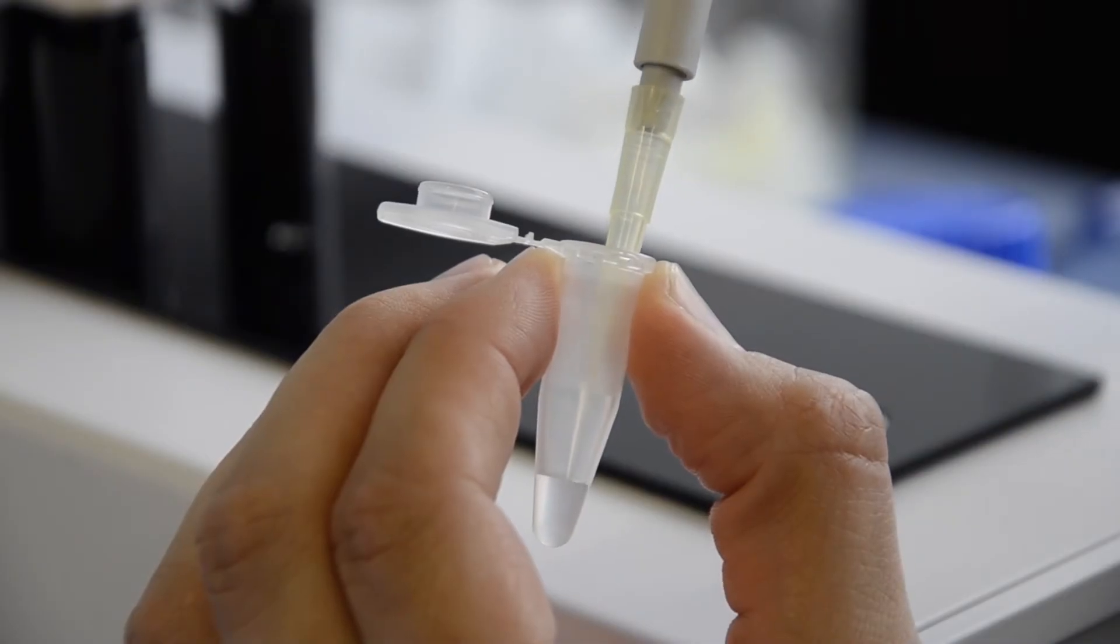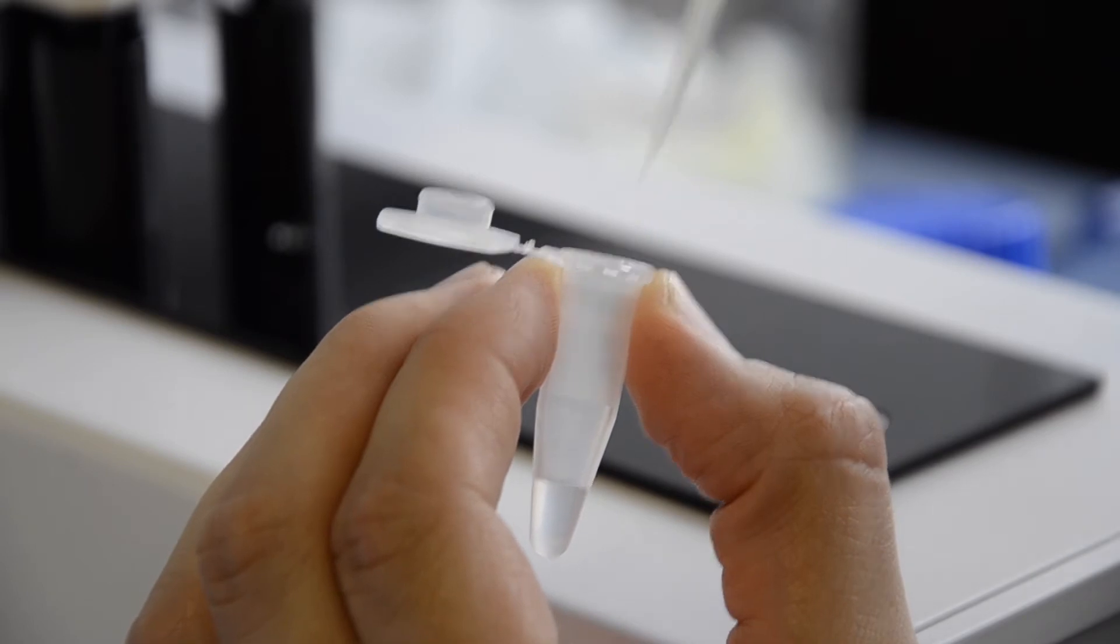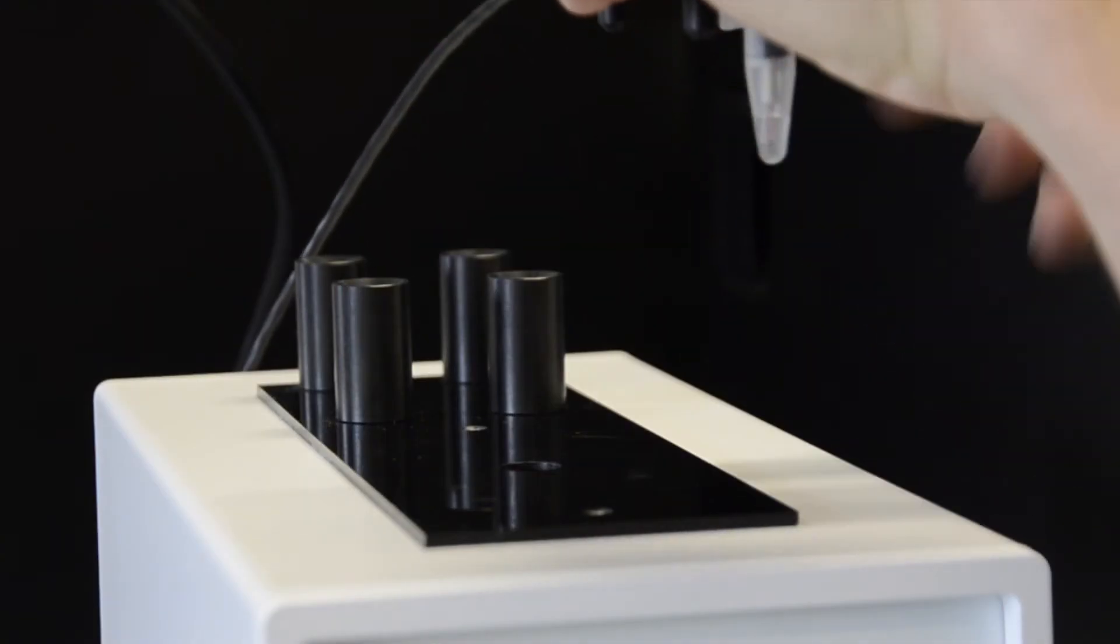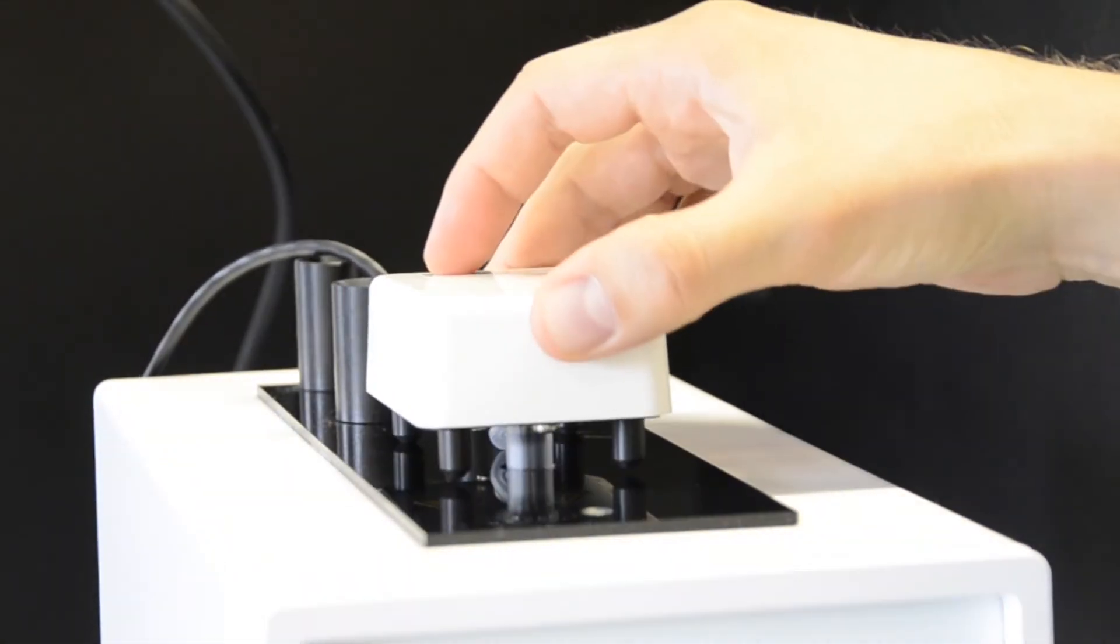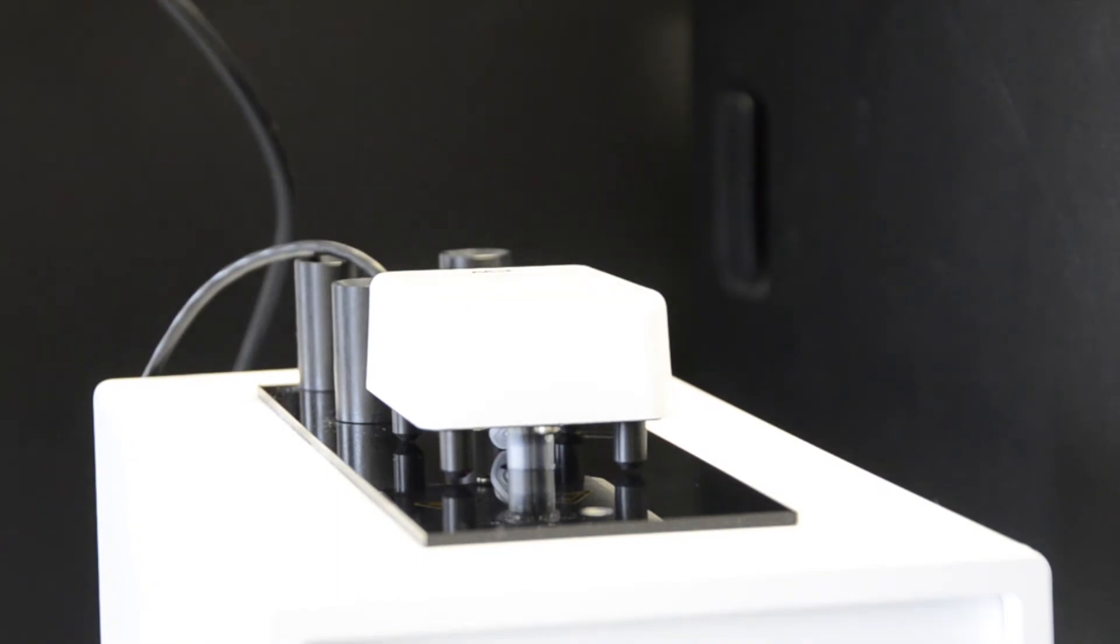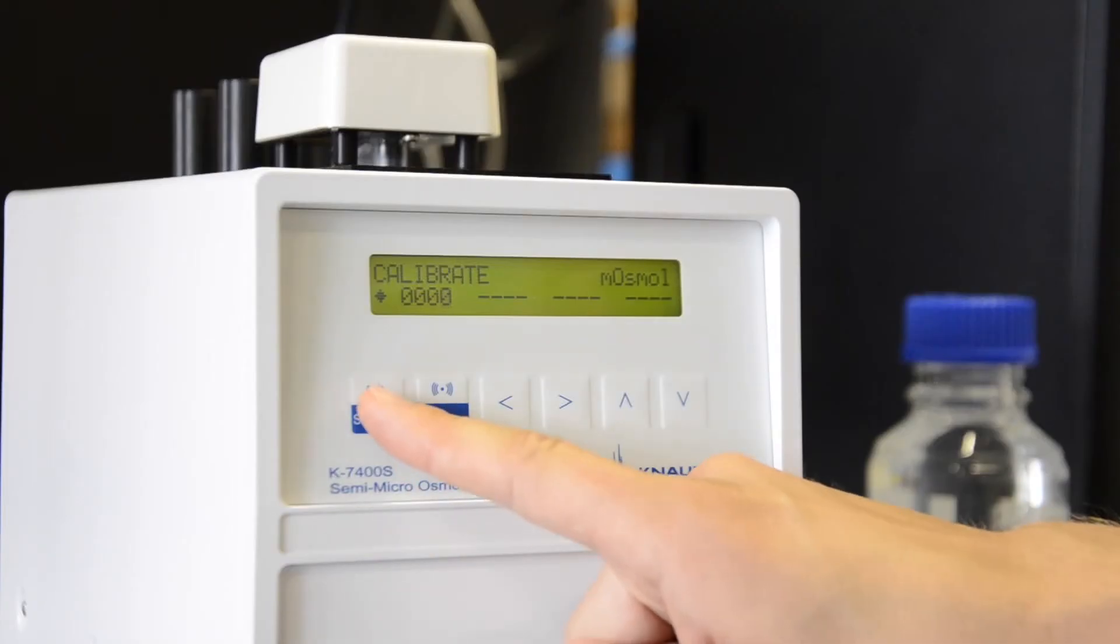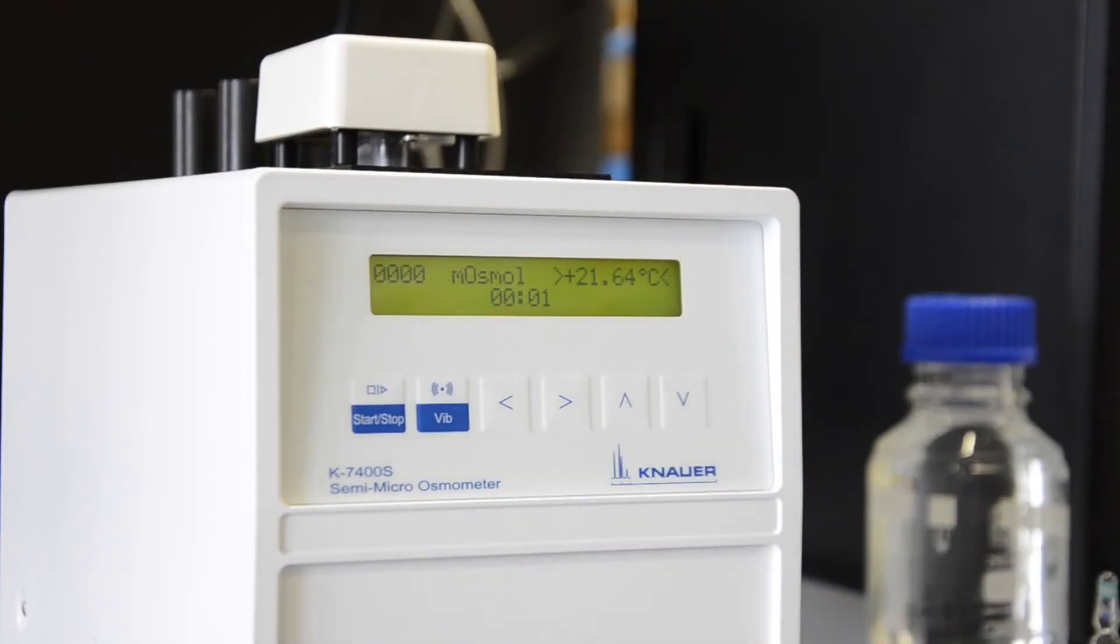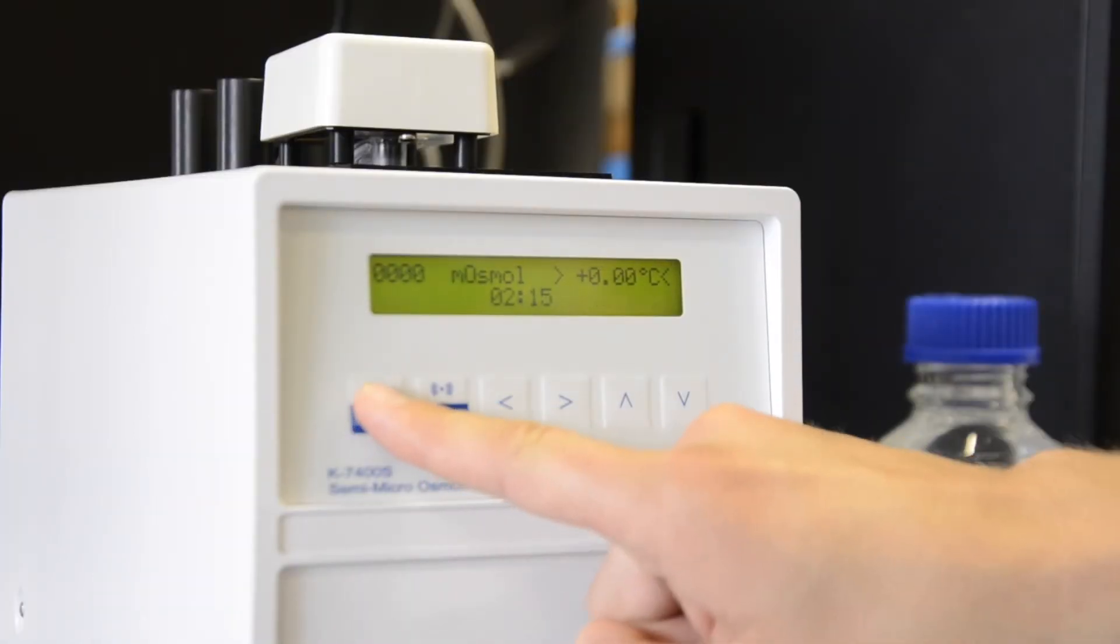To calibrate the first point you have to fill a new sample tube with distilled water and proceed as for the previous calibration. When the sample tube is placed into the cooling cavity press the start button and wait until the calibration process is finished. Confirm the calibration by pressing the start button once.